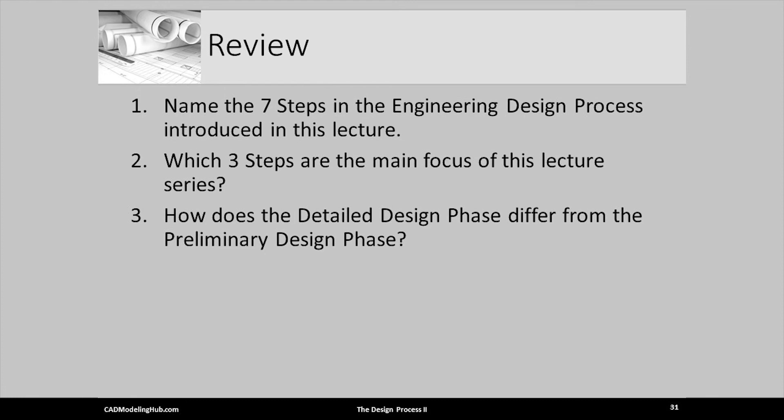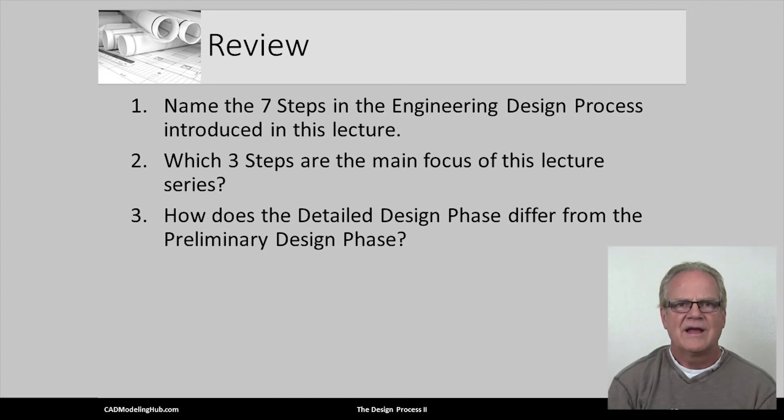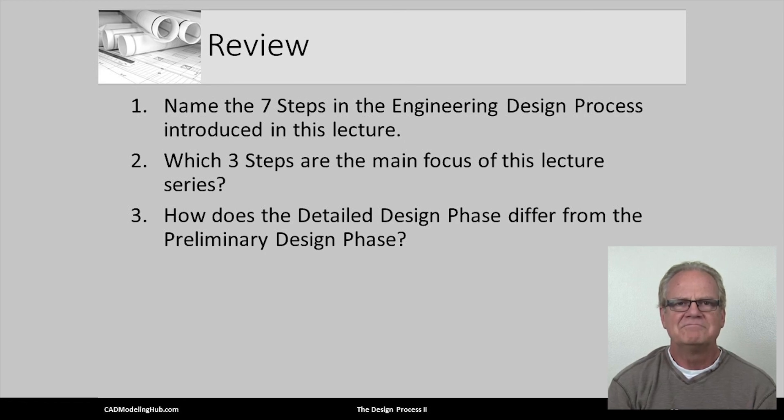Let's review: name and order the seven phases of the academic generalized design process. Which are the three main phases that are the focus of this course? Describe how the phases differ from each other — for example, how does detailed design differ from preliminary design?